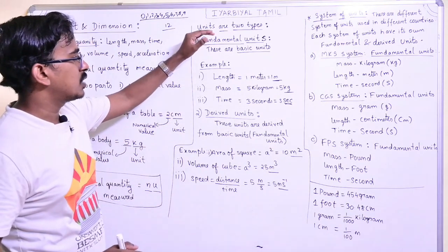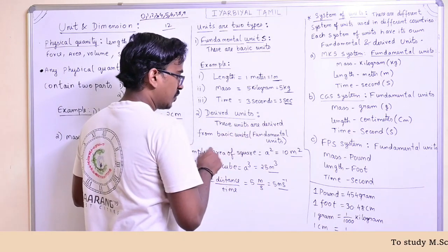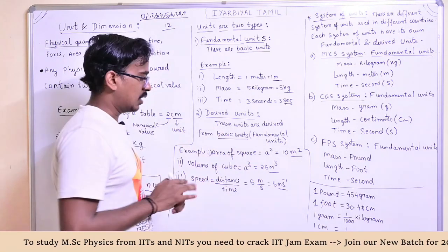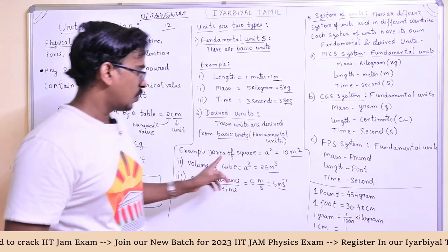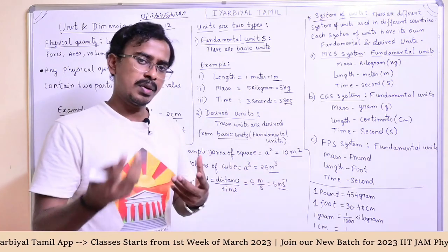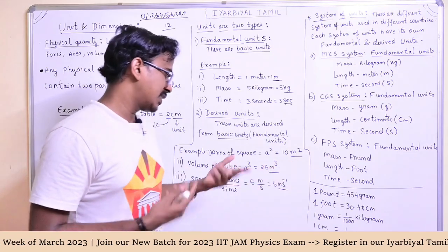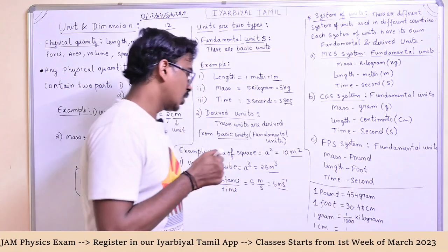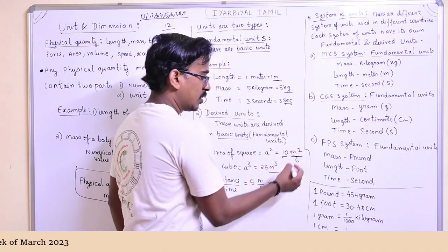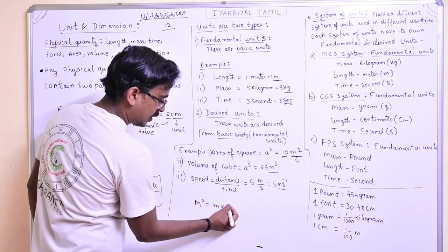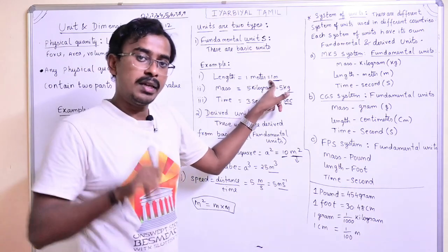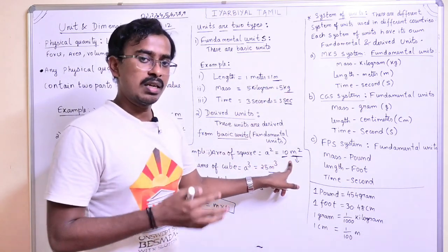Now, derived units. These are units derived from fundamental units. For example, area of a square. The formula is side squared — so the unit is meter square, which is meter into meter. In this meter square unit, meter is used. So, meter square is a derived unit because it is derived from the fundamental unit meter.